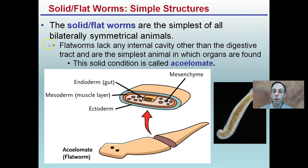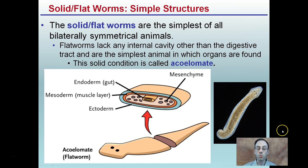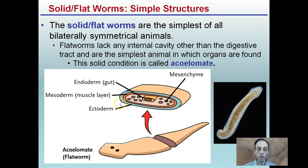Flatworms are the simplest of all bilaterally symmetrical organisms. They're more complex than what we've talked about so far, but overall they are the most simple. They lack any internal cavity other than a digestive tract and are the simplest animals in which organs are found. These are called acoelomates. This is their gut region, this is their ectoderm, here's their mesoderm, and their endoderm would be their gut. Very, very simple.